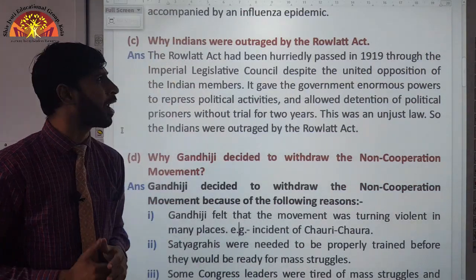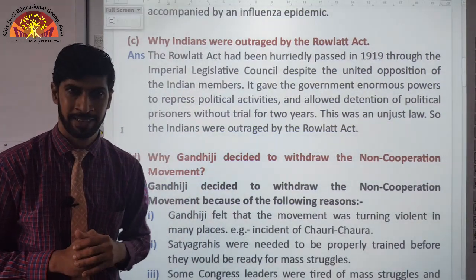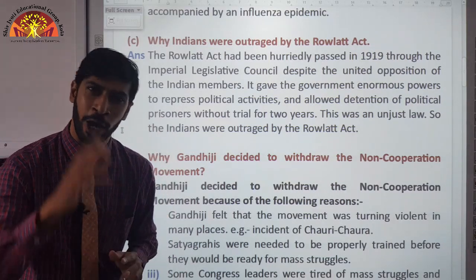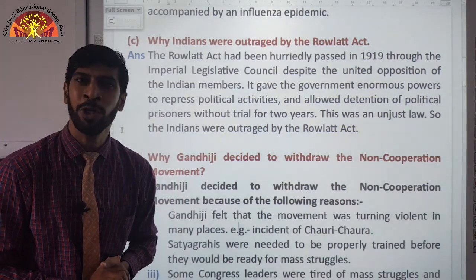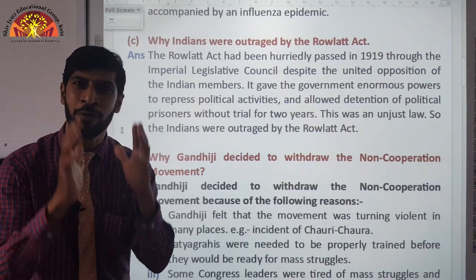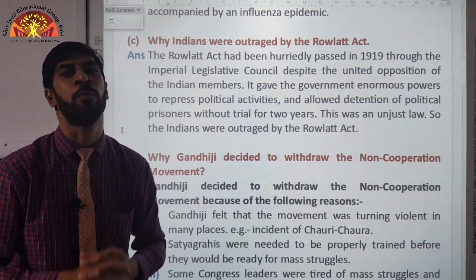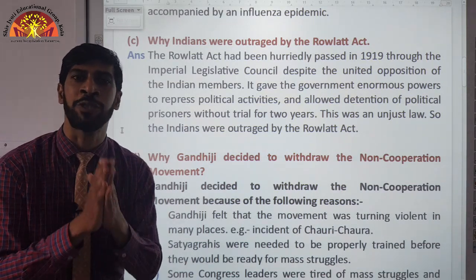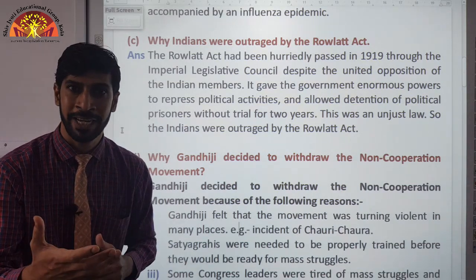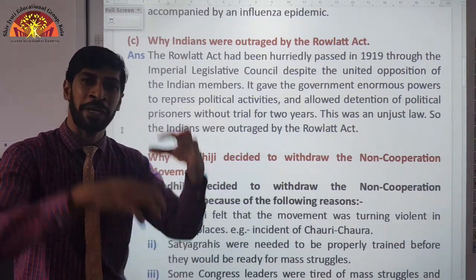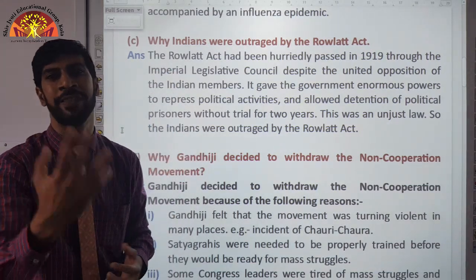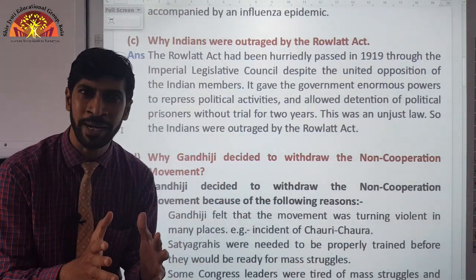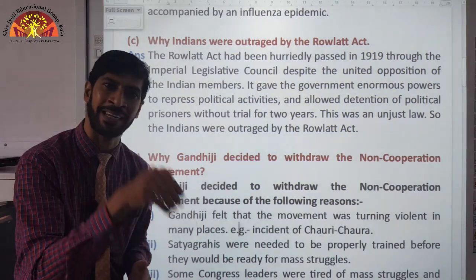Why were Indians outraged by the Rowlatt Act? We all know the aim of the Rowlatt Act — it was to destroy the national movement of India. Through this act, they had the power to imprison any person for two years without any trial. They could pick up anyone and put them in jail for two years. People were obviously not happy because of this.